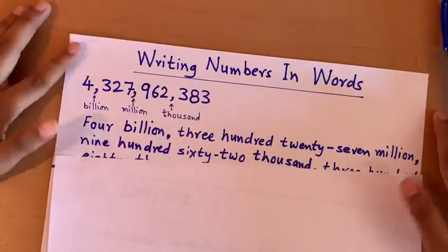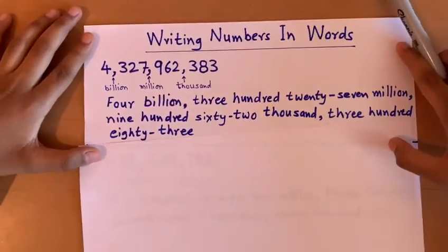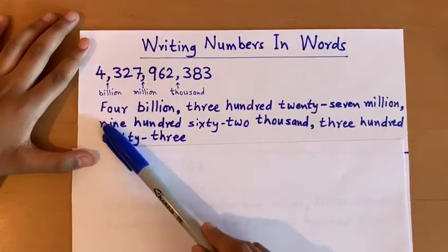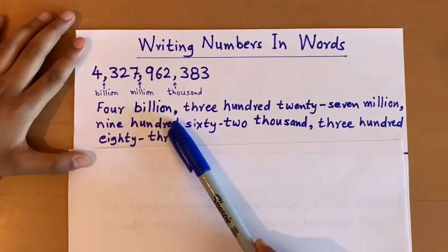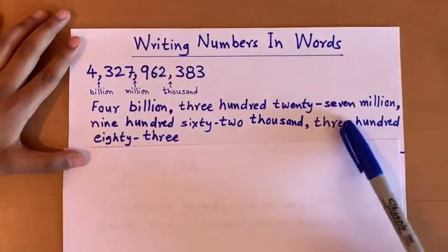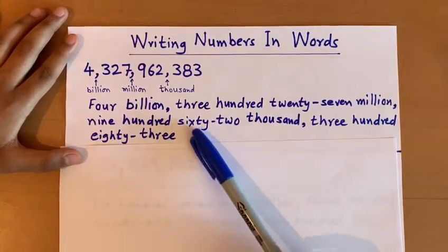we write four billion, and since there is a comma in our number, we write a comma in our word, three hundred twenty-seven million, and since there is a comma in our number,